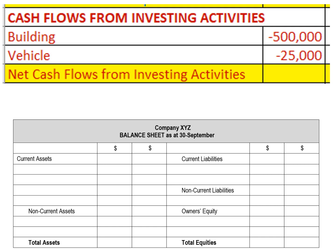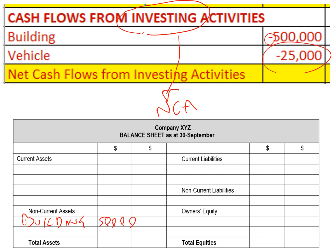It gets a little easier from here. We're now in the middle part of the cash flow statement — investing activities, which relate to non-current assets. A negative figure means we've made a purchase, reducing our cash, but the twofold effect means we've acquired more of that asset. So we bang the building purchase of $500,000 into our non-current assets section. We've also bought a vehicle — negative figures mean acquisitions — $25,000 into non-current assets as well.